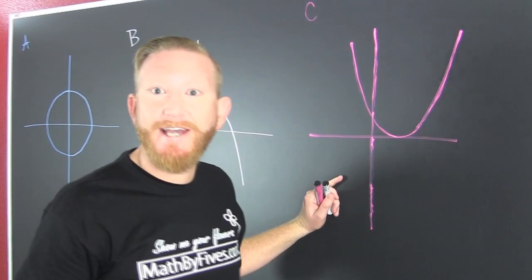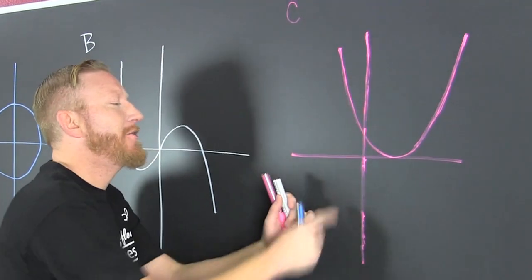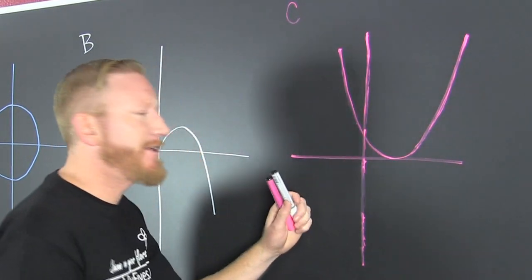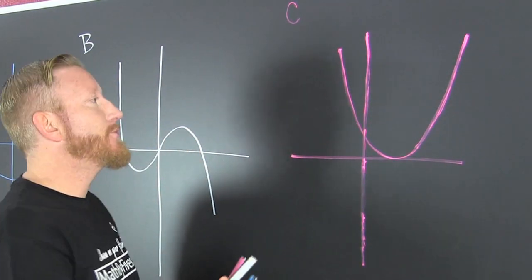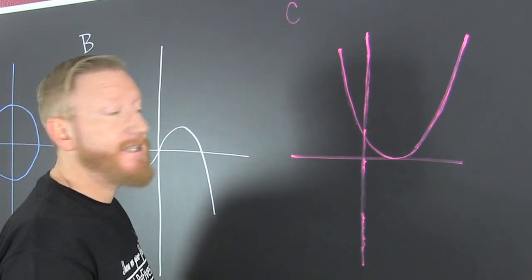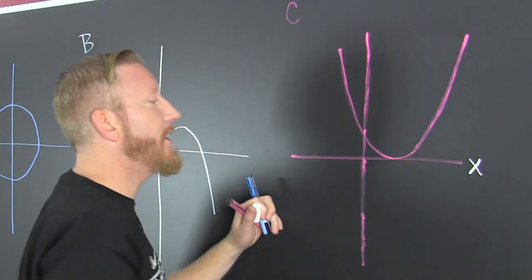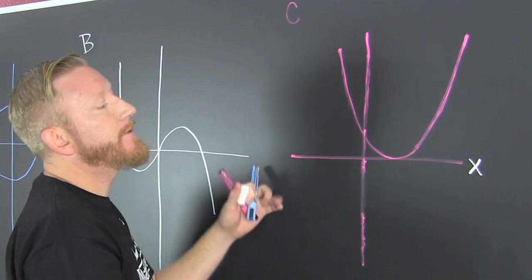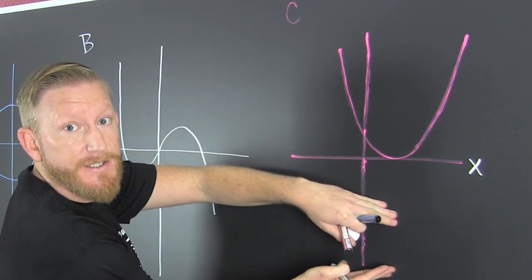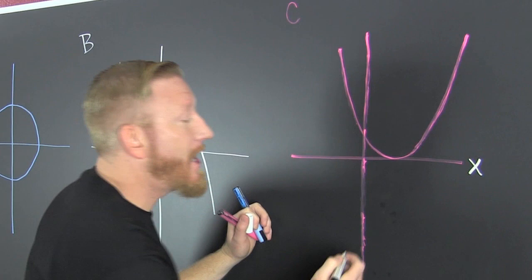Let's go over to this pink one. That pink is really struggling. X-axis symmetry — let's see if that happens. This is my x-axis, so if I fold it, does it lay on top of itself? No. So it's not x.